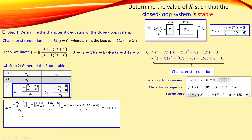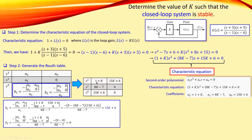Substituting the values from the characteristic equation, we get b1 equals 15K plus 6. For completeness, b2 is completely zero, so there is no problem with that entry. Making the table compact, we have: a2 = 1 plus K, a1 = 8K minus 7, a0 = 15K plus 6, and b1 = 15K plus 6, while b2 = 0. To evaluate stability, we use the first column of this table.